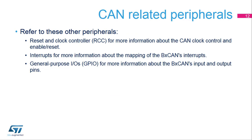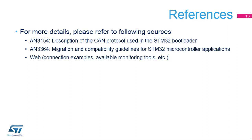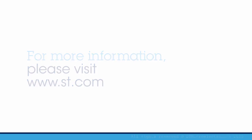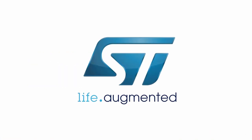For additional information, refer to the training modules for peripherals which may affect BX CAN behavior: the Reset and Clock Controller, or RCC, for more information about CAN clock control and enable reset, and interrupts for more information about BX CAN input and output pins. There are also dedicated application notes on the CAN topic. To learn more about the CAN interface, you can visit a wide range of webpages discussing CAN interface issues and bus monitoring tools. Many digital oscilloscopes support direct reading and analysis of data performed on the CAN bus.